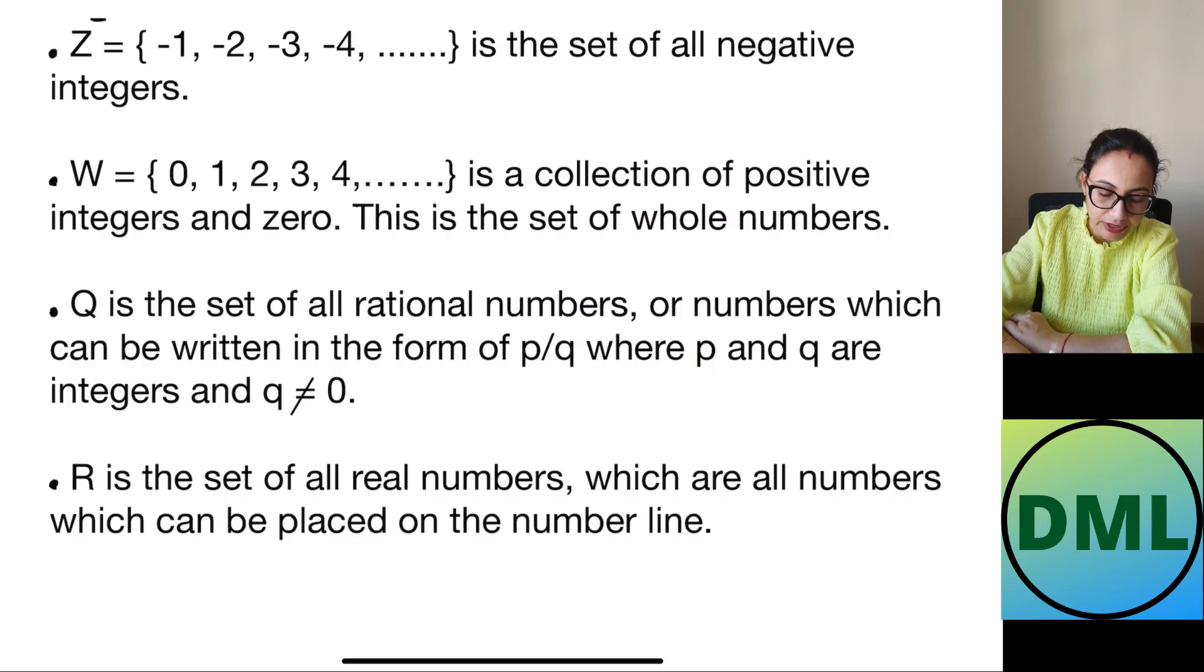P and Q are integers and Q is not equal to 0 because Q is written in the denominator. If it is 0 then your answer will be equal to infinity. You can't calculate that answer. So this condition is must when you are writing the answer. Q should not be equal to 0.